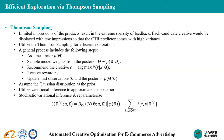Another important part is the efficient exploration. Limited impressions of a product result in the extreme sparsity of feedback. Each candidate creative would be displayed with few impressions, so that the CTR predictor comes with high variance. Thus, we utilize Thompson sampling for efficient exploration. The general process of Thompson sampling includes the following steps: first, assume a prior distribution with respect to the parameters, usually the Gaussian distribution; then sample model weights from the posterior and recommend the creative with the maximum probability. After receiving the reward, we update the posterior distribution.